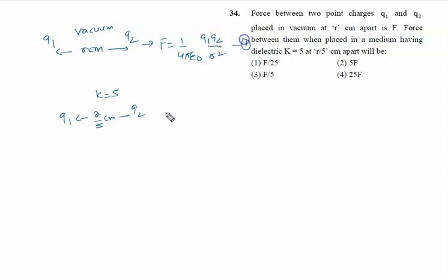Second situation, force is F dash equal to one upon four pi epsilon not k, k is dielectric constant 5, into q1 q2 upon r square. r square means r square by 25, so 25 comes up, canceling 5 with 5.